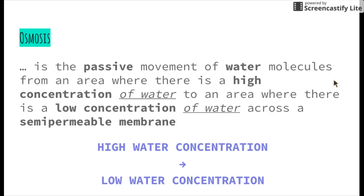Now let's have a look at osmosis. Osmosis and diffusion are very similar, however there are a few very important differences. Osmosis is the passive movement of water molecules from an area where there is a high concentration of water to an area where there is a low concentration of water, across a semi-permeable membrane. A key similarity is that osmosis is also passive, and involves movement from high concentration to low concentration. However, the big difference is that osmosis is only the movement of water.